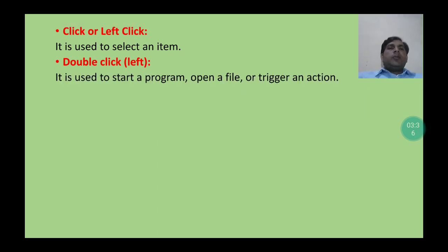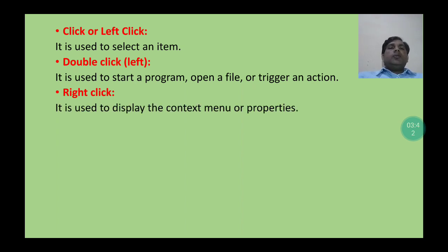The next action of the mouse is right click. Right click is used to display the context menu or properties. Suppose we have to display the context menu or the properties of an item on the screen — then we can use right click of the mouse. Just look in the video how we can perform right click using the mouse.